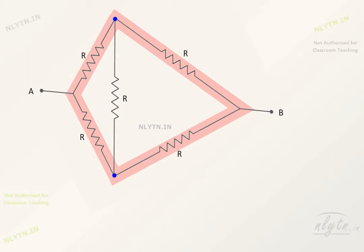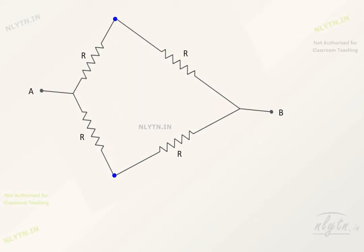So there will be no current in this resistor, and thus it can be removed. Now it is easy to find the equivalent resistance between points A and B.